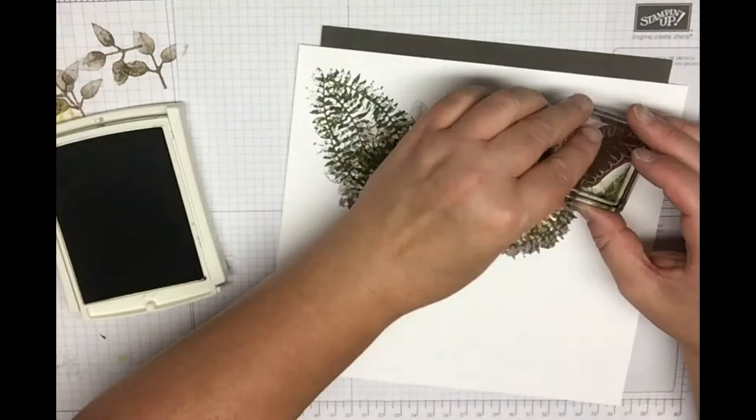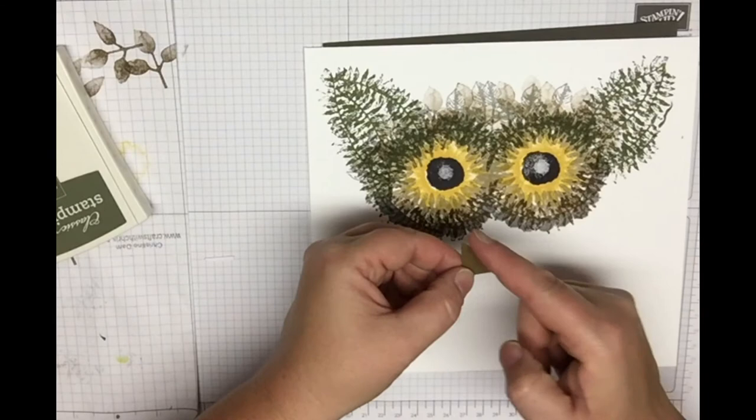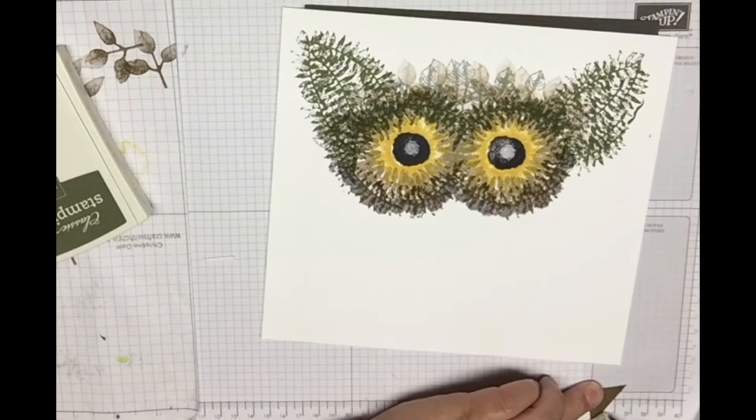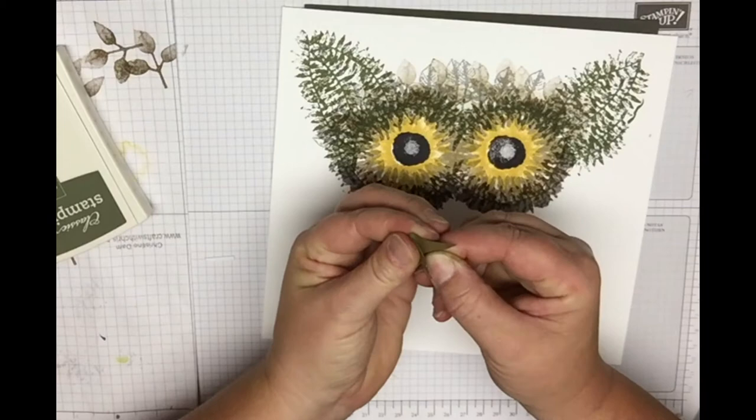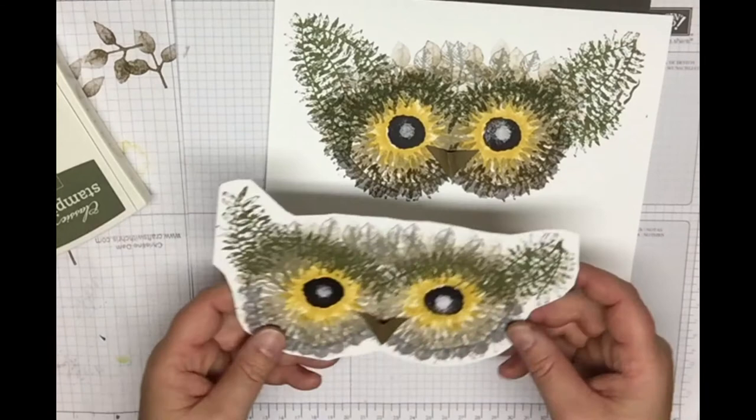The last step I did was I just took some scrap brown, this was Soft Suede, and I used the smallest layering square framelits. Then I just cut it in half on the diagonal. I'm just going to use some Fast Fuse and put a little bit on the corners, give it a little fold to kind of form his beak, and then just put that right in between his two eyes there. That would be his beak.